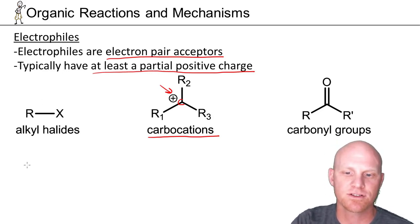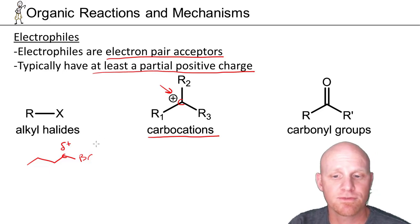It turns out an alkyl halide here, so say we had this molecule right here, this carbon bonded to the bromine would have a partial positive charge and would be a good electrophile. Most of the common electrophiles we'll see for much of the whole year of organic chemistry fall into these three classes.